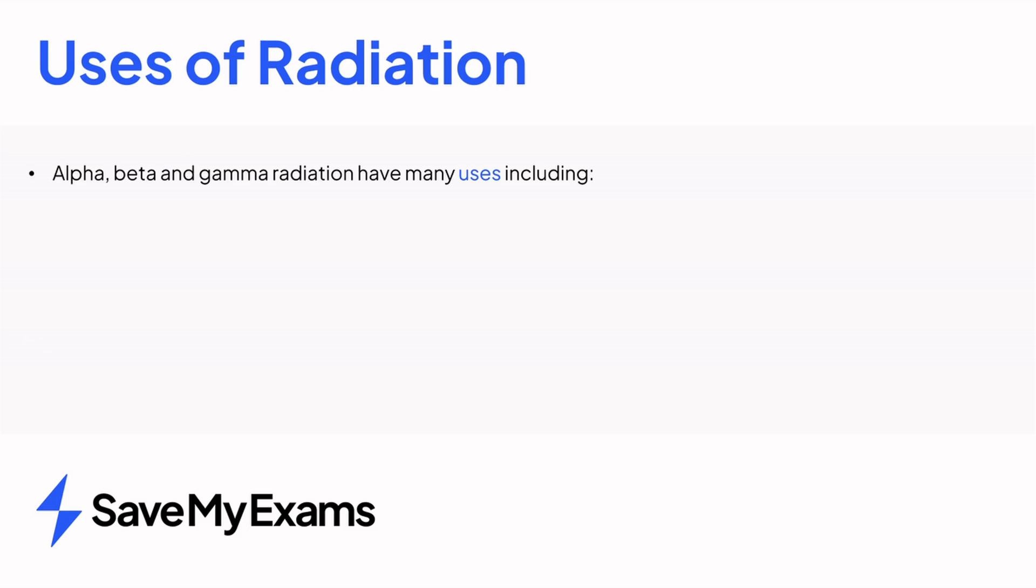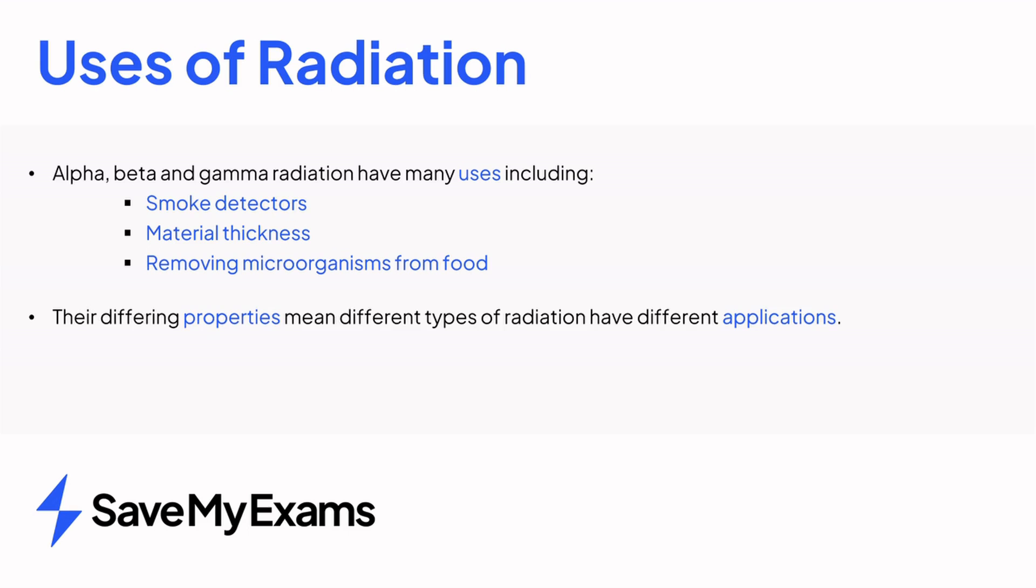Alpha, beta, and gamma sources can be used in smoke detectors, measuring material thickness, and extending shelf life of food products, among other uses. Depending on the properties of the radiation type, different applications will be more appropriate. It's on you to be able to recall these properties and decide the best type of radiation for a variety of uses, and you will normally have to justify your answer.